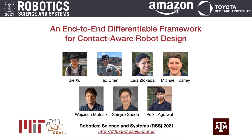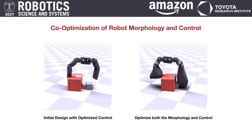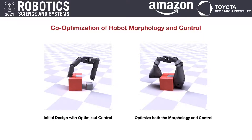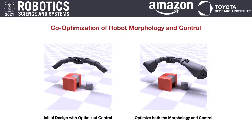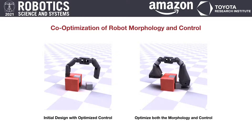My name is Jie Xu. I'm a PhD student at MIT. In this work, we propose a framework to efficiently co-optimize the design and control of a manipulator robot. Morphology and control are two key pieces of a manipulator. Jointly optimizing them can significantly improve the task performance of the robot.